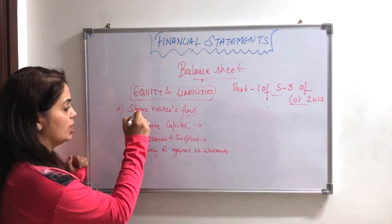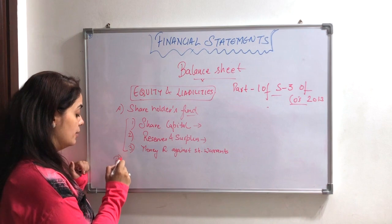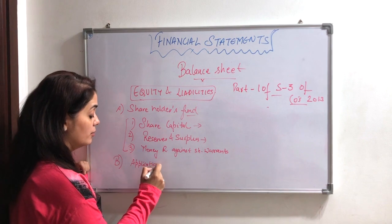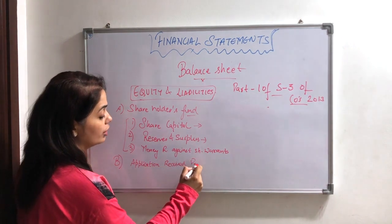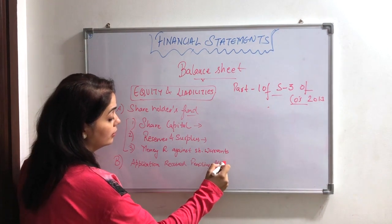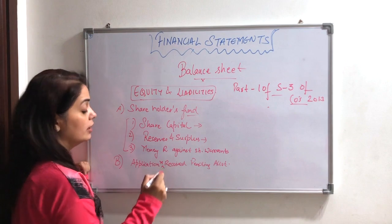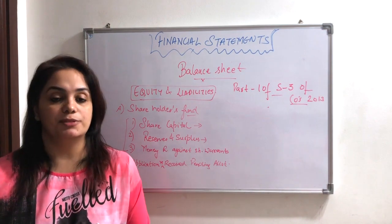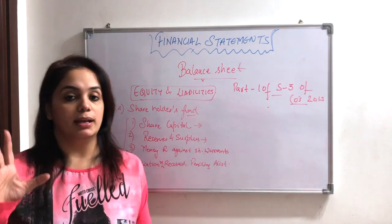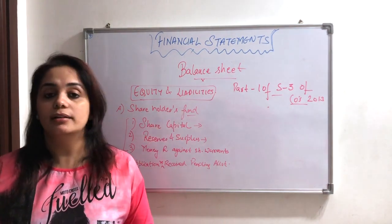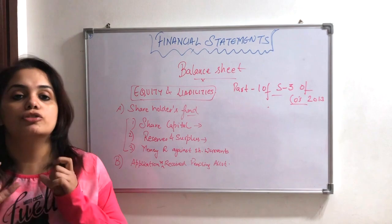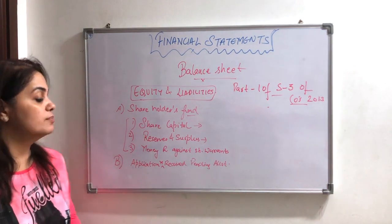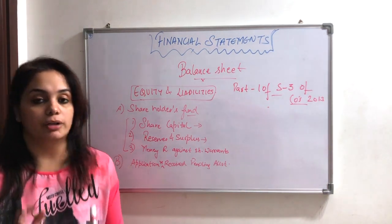So those are the three headings under shareholders' fund. Now, in Part B, we have application money received pending allotment. For example, if I got application money in the first week of March but I have to do allotment after one month, and I have to close my books in March, I will write that I received some application money but allotment is still pending. So the heading is: application money received pending allotment.